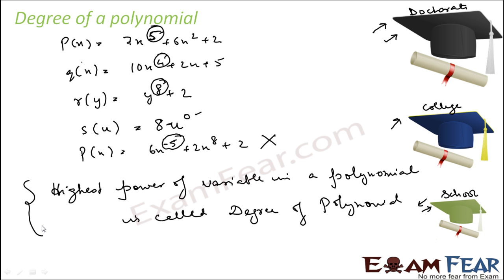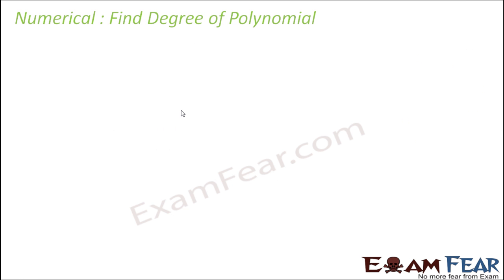Please don't get confused with monomial, binomial, and trinomial terms — that is not much important and is simply about counting the number of terms. So this will be trinomial, this is also trinomial, this is binomial, this is monomial. But when you talk about degree, you talk about the highest power: degree 5, degree 4, degree 8, degree 0.